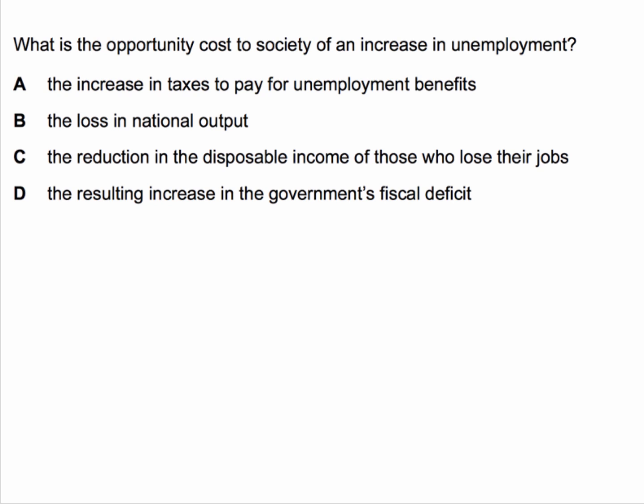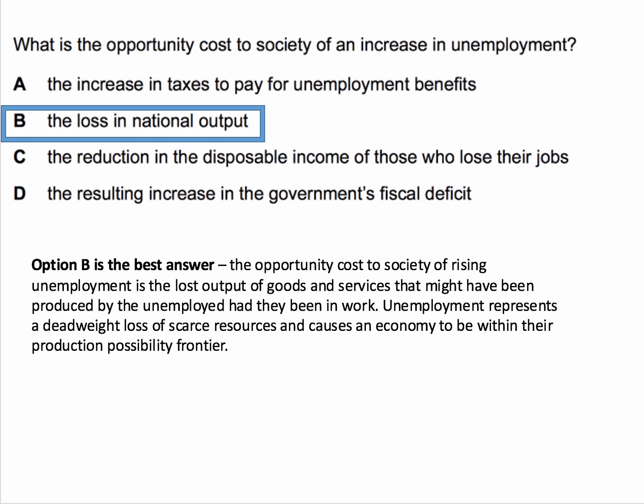So what's the opportunity cost of rising unemployment to society as a whole? All of these are costs of unemployment, but the best answer is clearly B — the loss in national output. Opportunity cost is the loss, the sacrifice, and the opportunity cost to society of increasing unemployment is the fact that the output of goods and services the unemployed might have produced is lost — had they been in work. Unemployment is therefore a deadweight loss of scarce labour resources; that time cannot be recovered, and it causes an economy to operate well within its production possibility frontier. That's the opportunity cost to society.